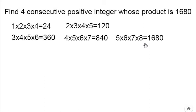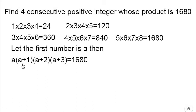Let's say the first number is a. Then that would be a(a+1)(a+2)(a+3)=1680.